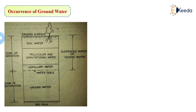Here, all zones are divided in terms of water only, because we are studying the concept of groundwater. So after the ground surface, we have a soil water zone, through which the roots of a plant can easily extract water for nourishment.